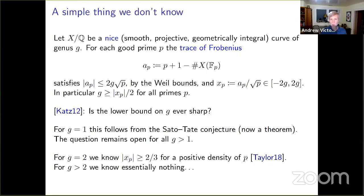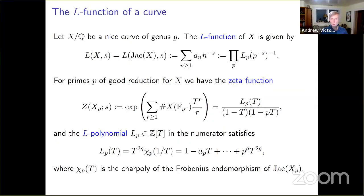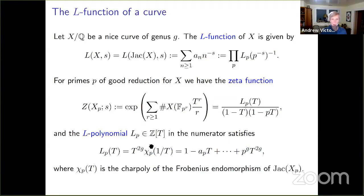This example illustrates how challenging the question we're considering is. Even to know that these distributions are non-trivial is hard to prove. With that dose of humility, let us press on. I'll recall the definition of the L-function of a curve, or equivalently of its Jacobian. This is defined as an Euler product over primes of the field of definition of the curve — in our case, Q.